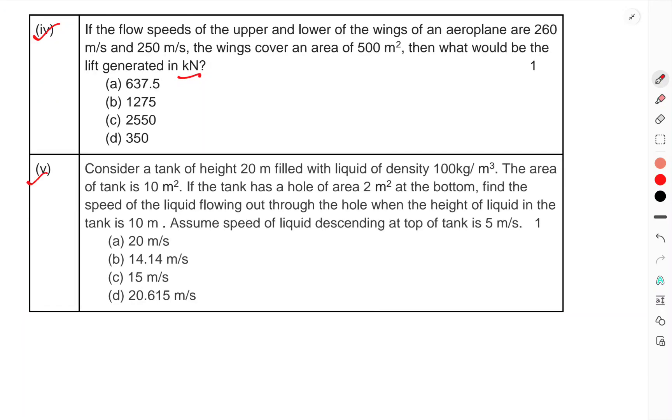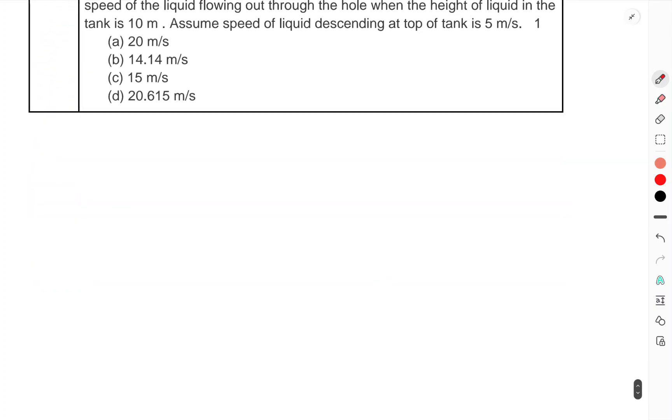Question 5: Consider a tank of height 20 m filled with liquid of density 100 kg/m³. The area of the tank is 10 m². The tank has a hole of area 2 m² at the bottom. Find the speed of the liquid flowing out through the hole when the height of liquid in the tank is 10 m. Assume the speed of liquid descending at top of tank is 5 m/s.